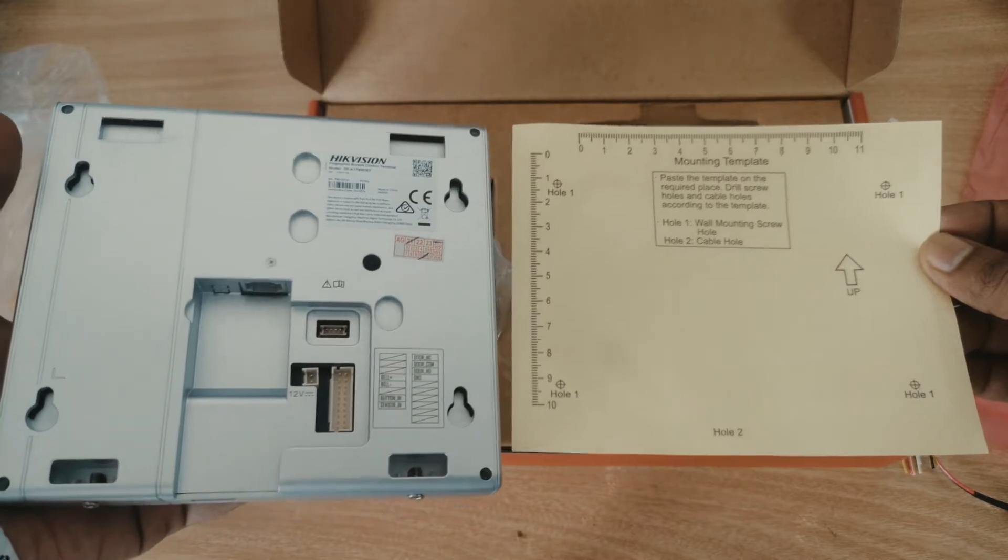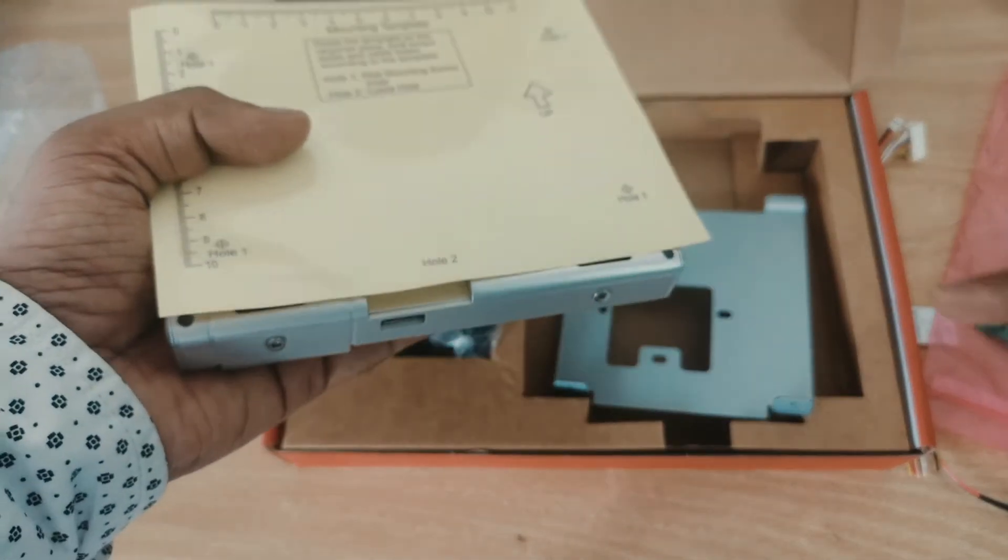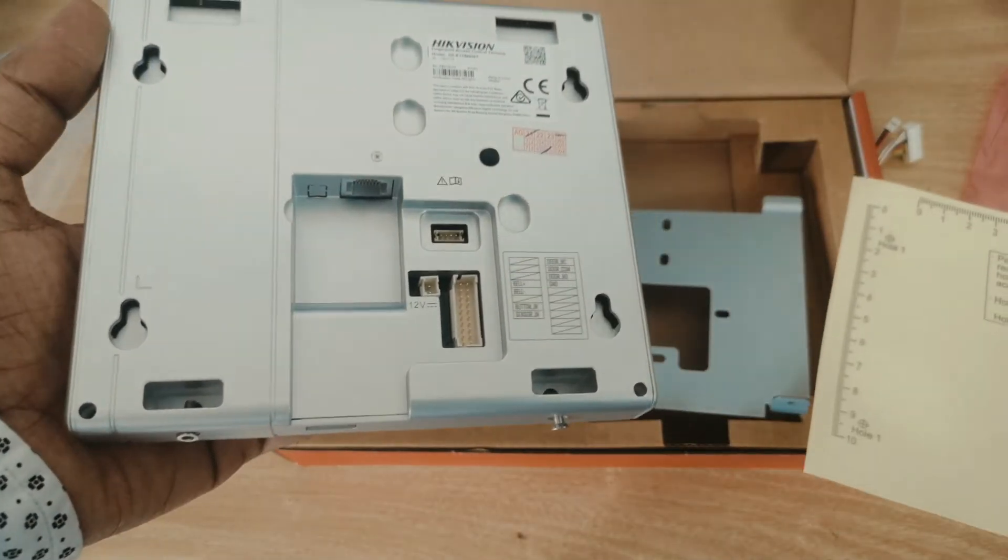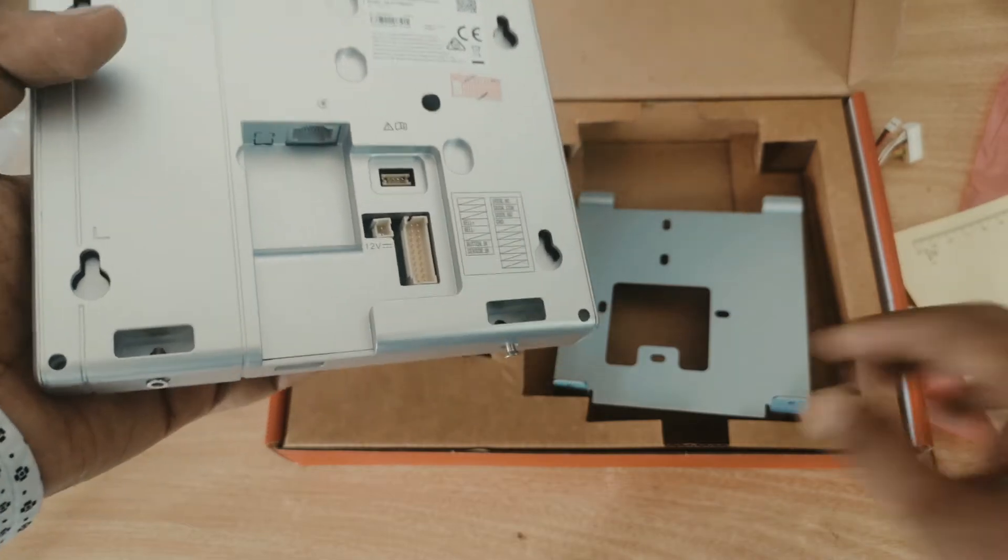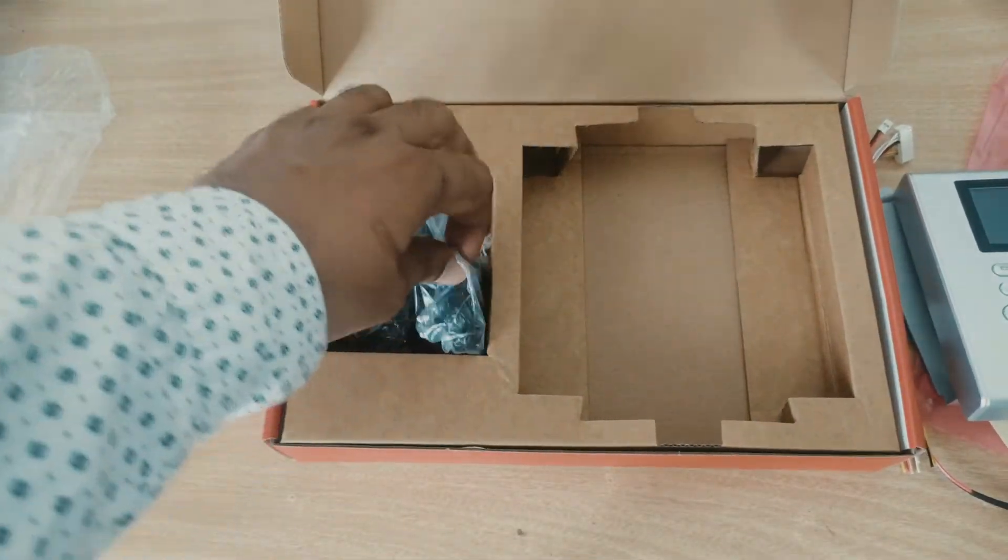This is the screwing option - you can put these four holes on the wall, then directly hang the device on the wall like this. Both options are available, so whichever you choose you can mount the device.